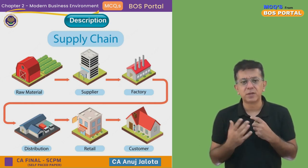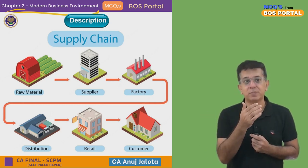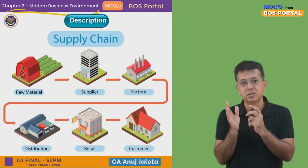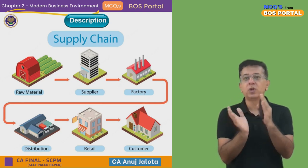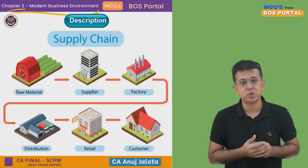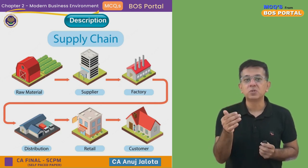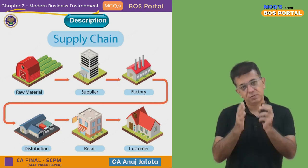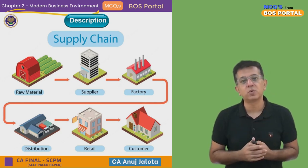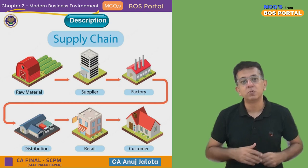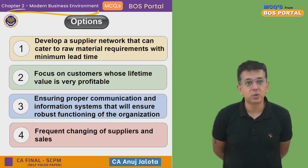Whatever you see on your screen right now is the diagram of supply chain management and this is how it works. There are two parts: upstream supply chain — that is everything from the factory back to the raw material supplier — and downstream supply chain — from the factory to the customer.